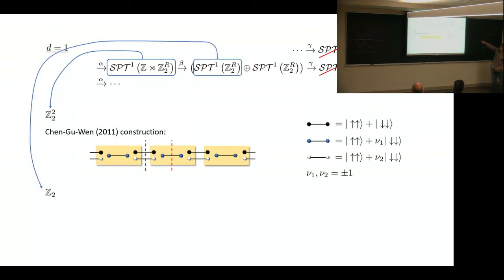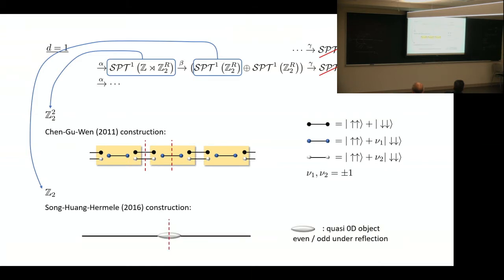Likewise, if we only have reflection symmetry, we have a Z_2 squared classification. This is given by, according to the strong subadditivity, can be constructed by just putting a quasi-zero-d object on the reflection point. Because there are two copies of this thing, this term here ends up being Z_2 squared. If you are familiar with exact sequence, you see that exactness checks out here in 1D.